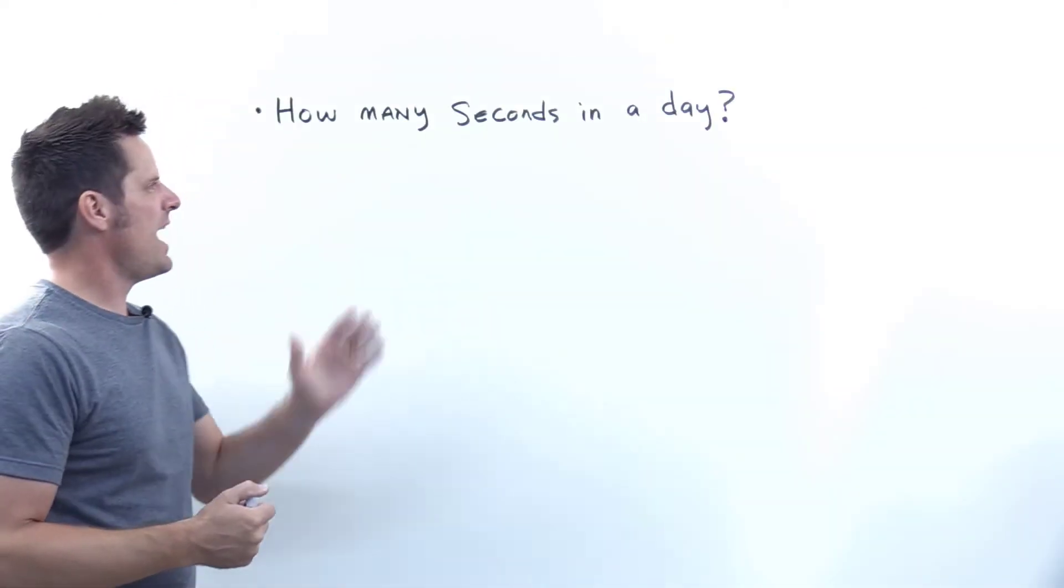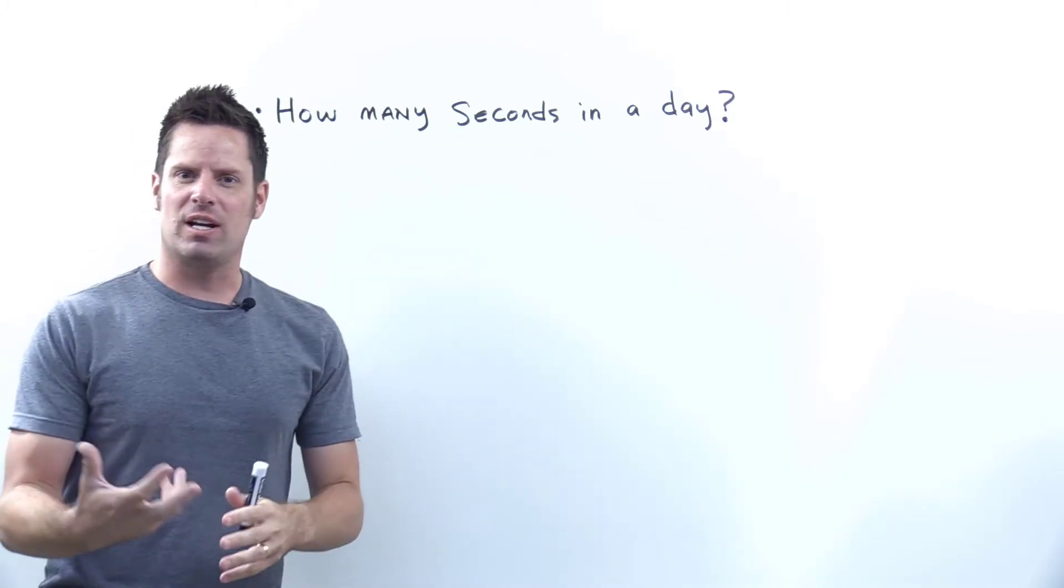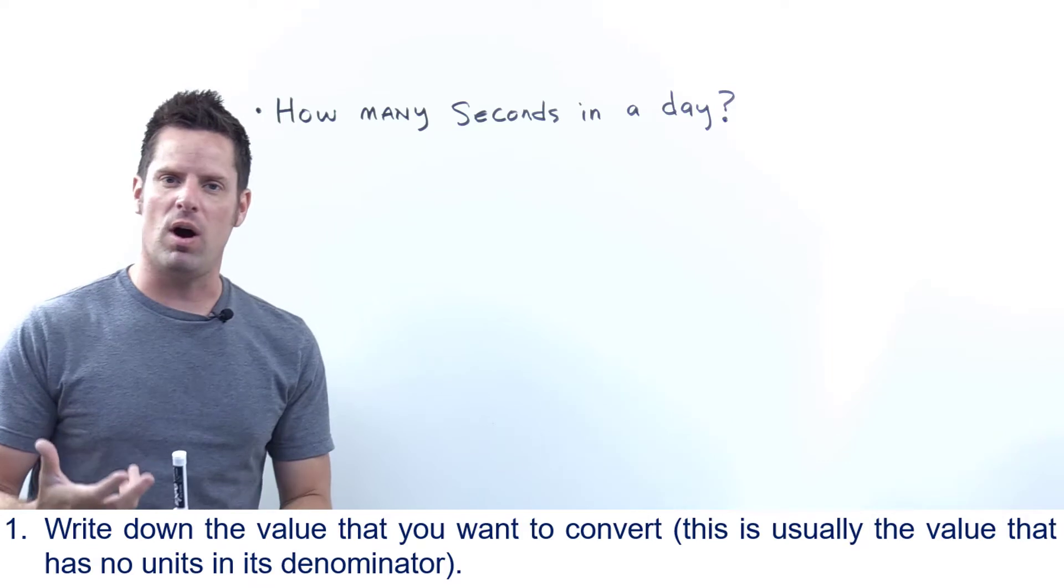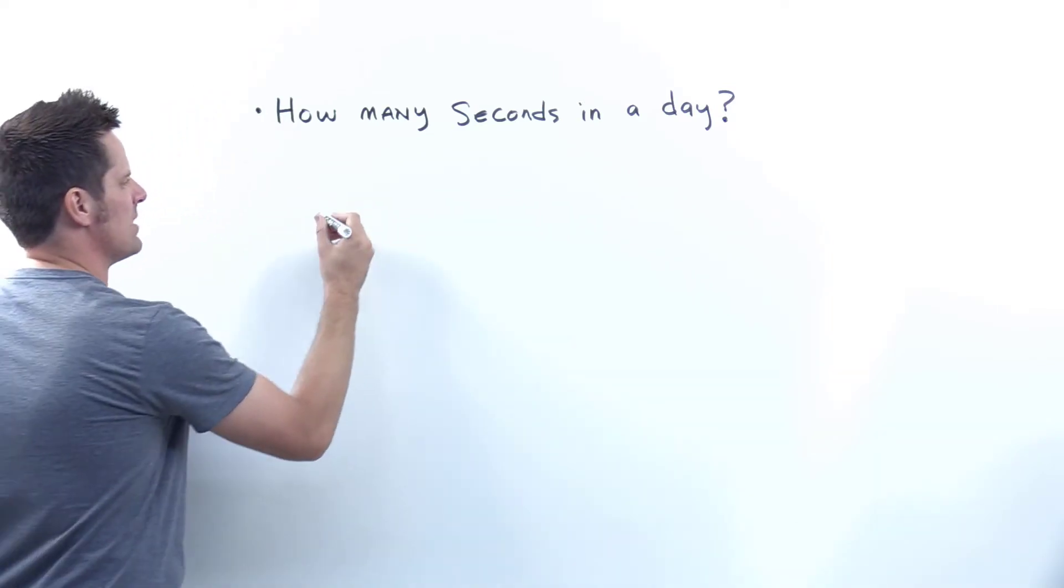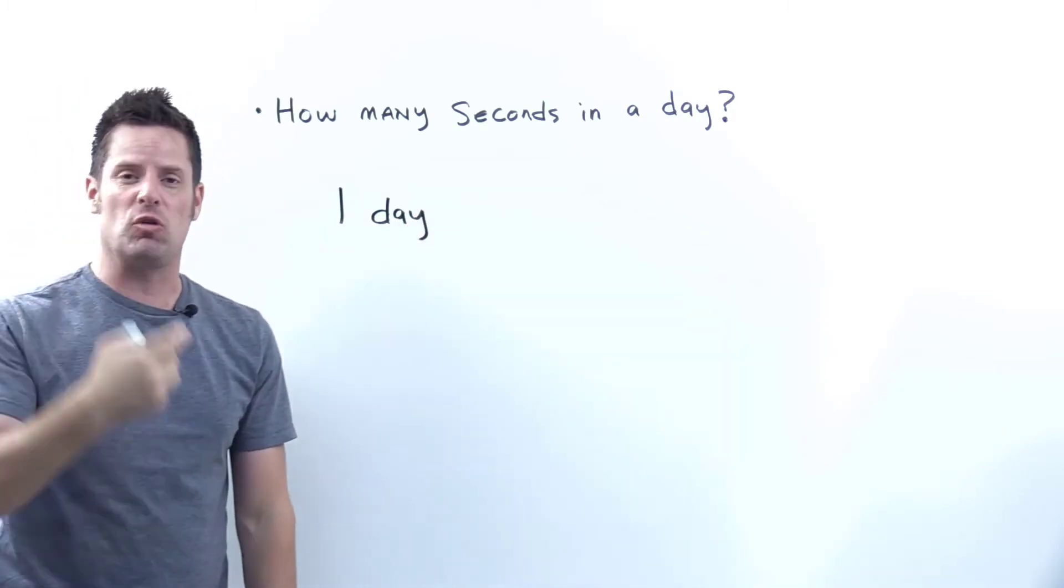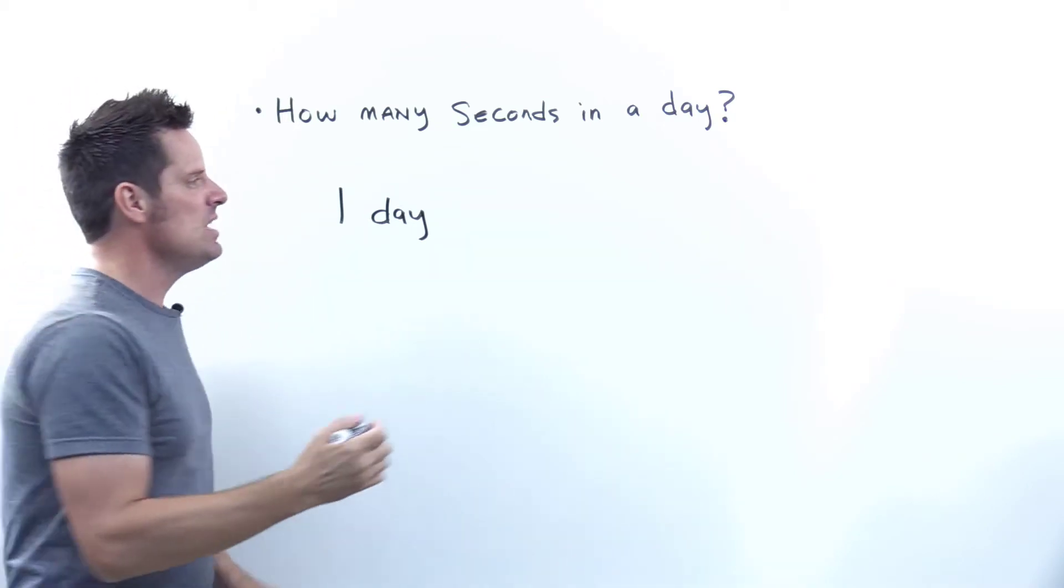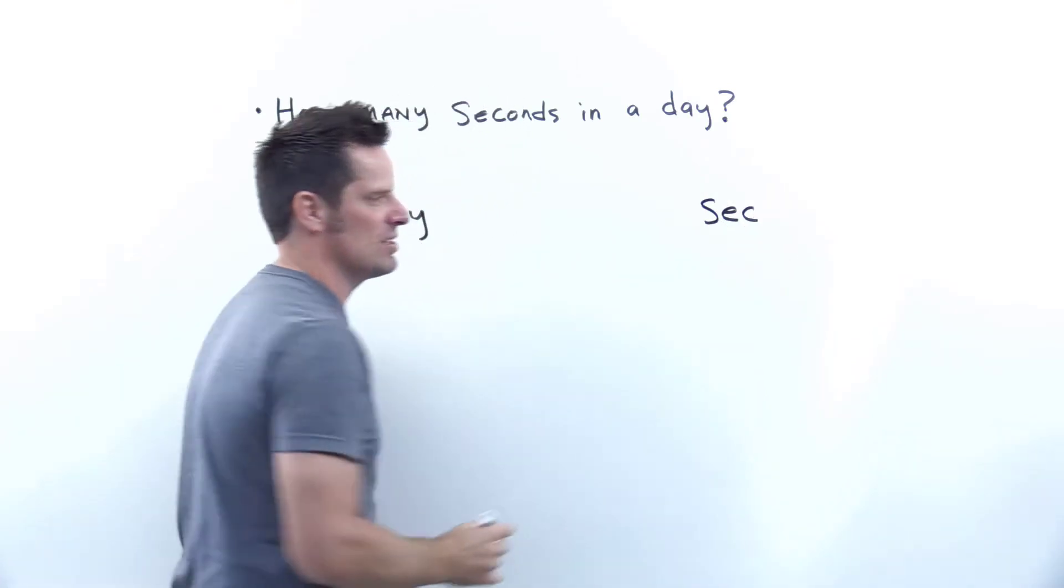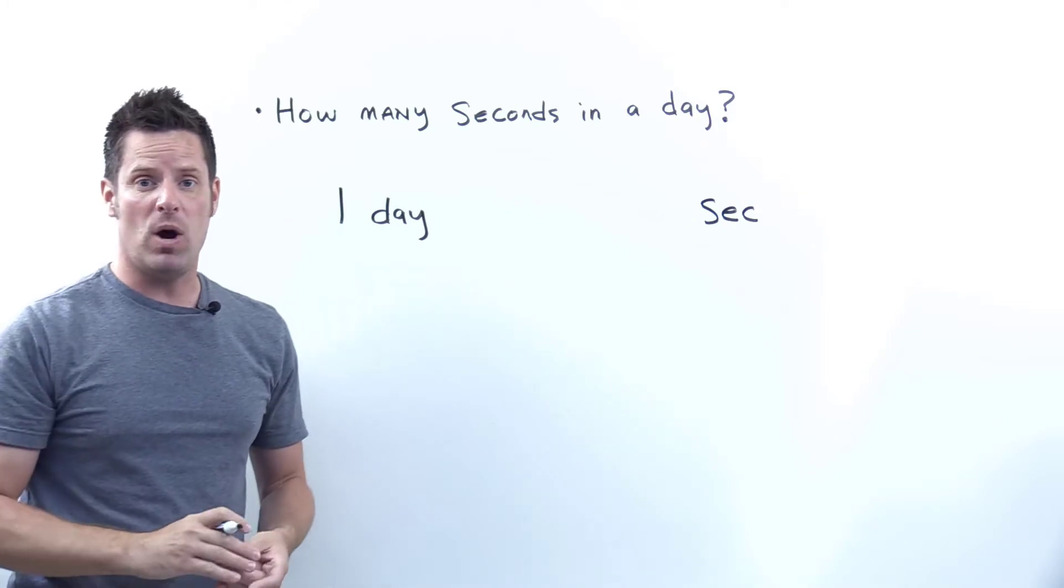So this question asks us how many seconds there are in one day. In my dimensional analysis unit conversion process, step one is write down the value that you want to convert. So the value that it gives us is one day. So I'm just gonna write down one day. What do I want to convert that one day into for this question? Well, I eventually want to convert it into seconds, which is abbreviated in SI unit land as SEC or sometimes just the letter S.